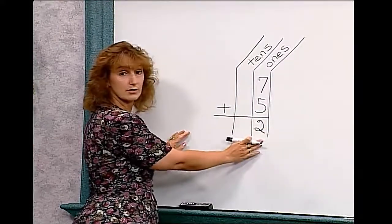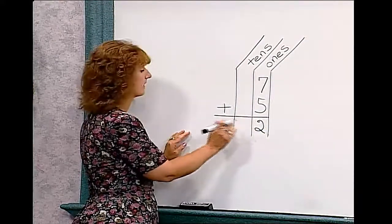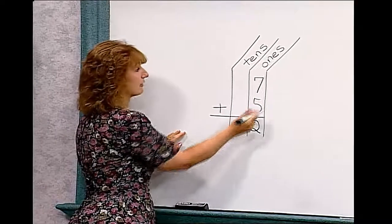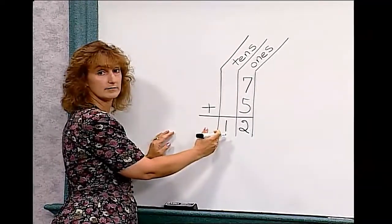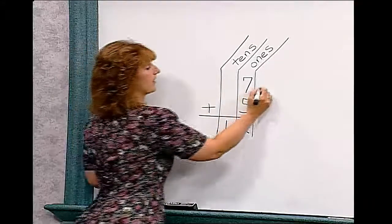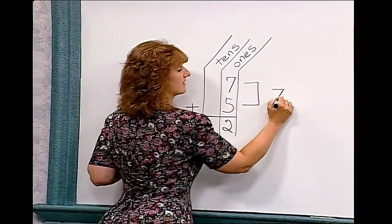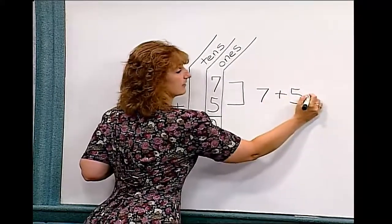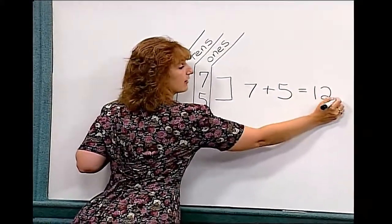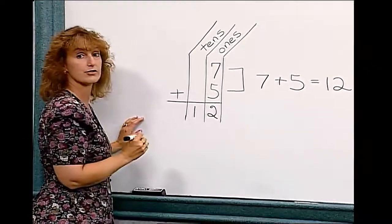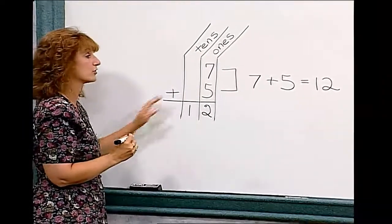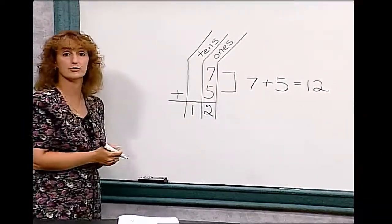The two goes in the ones column. The one gets carried over into the tens column. You can compare that to your horizontal addition. Seven plus five equals twelve. Our total, then: John scored twelve goals in the two months.